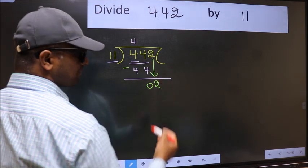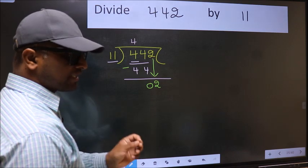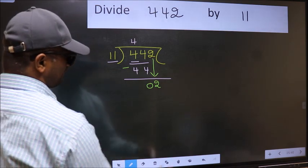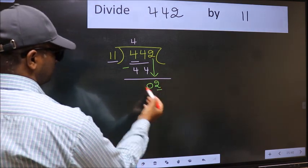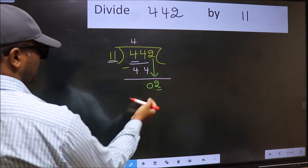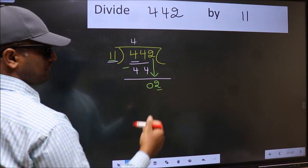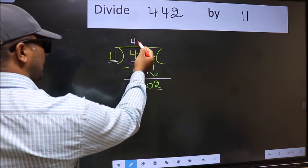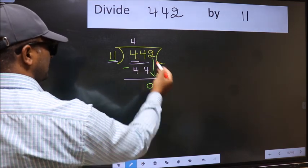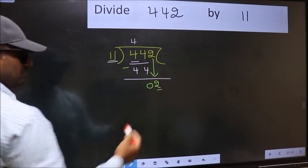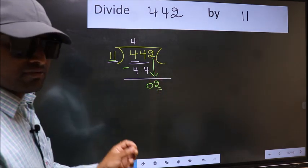After this step, the mistake happens. And the mistake is this. Here we have 2 and here 11. 2 is smaller than 11. So what many do is, they directly put dot and take 0, which is wrong. Why is it wrong?